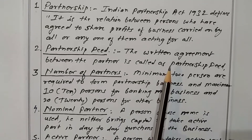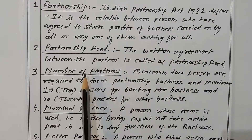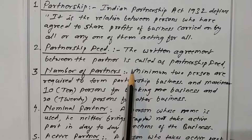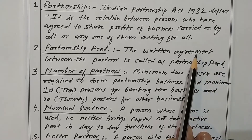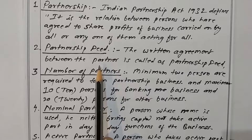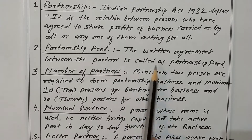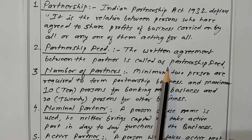What is a partnership deed? The agreement between the partners is called a partnership deed. In this agreement, various terms and conditions are noted — for example, profit sharing ratio, conditions of admission, condition of retirement, condition on death of partner, valuation of goodwill, etc.